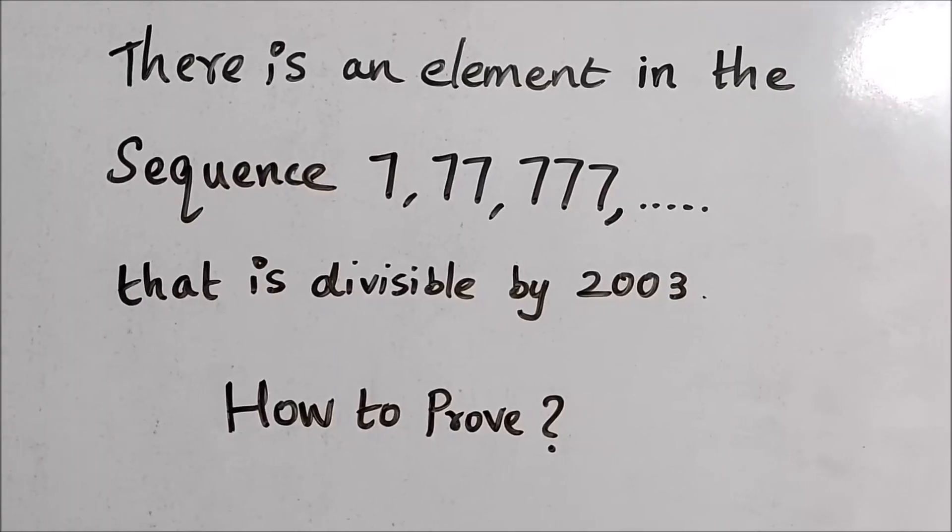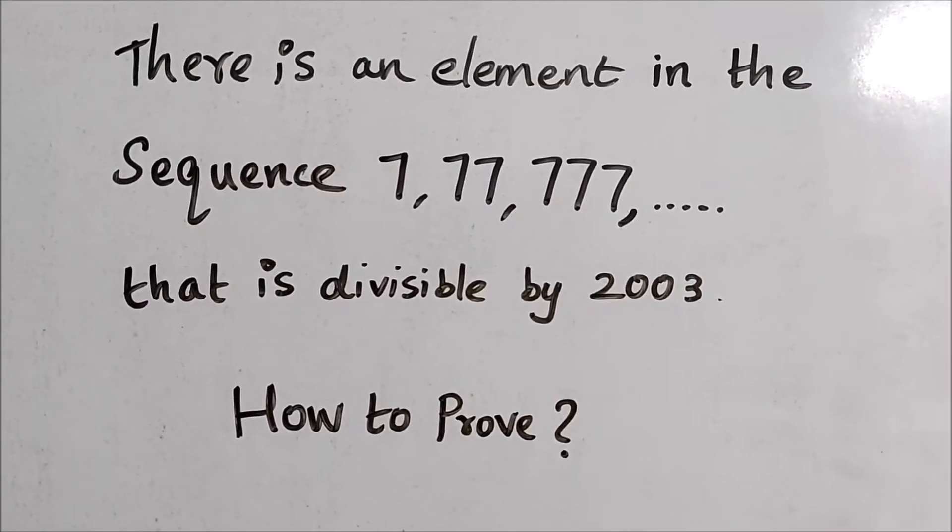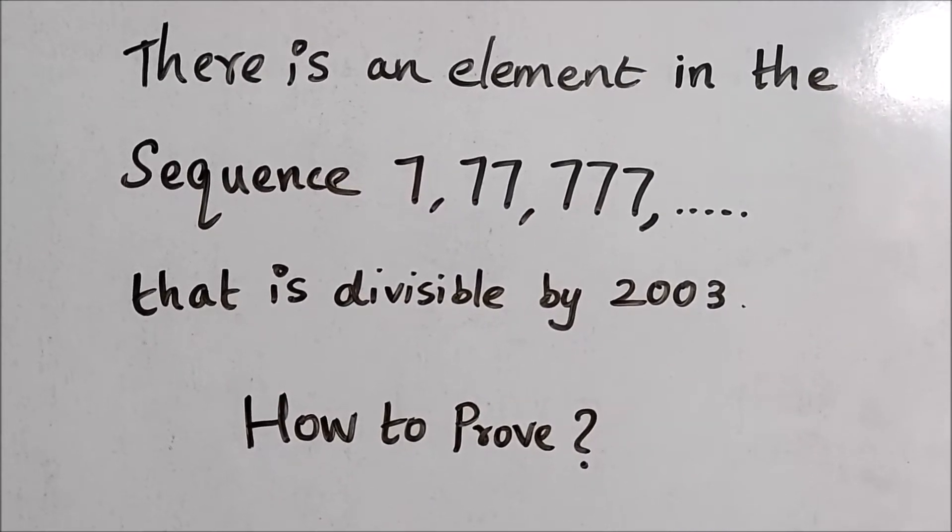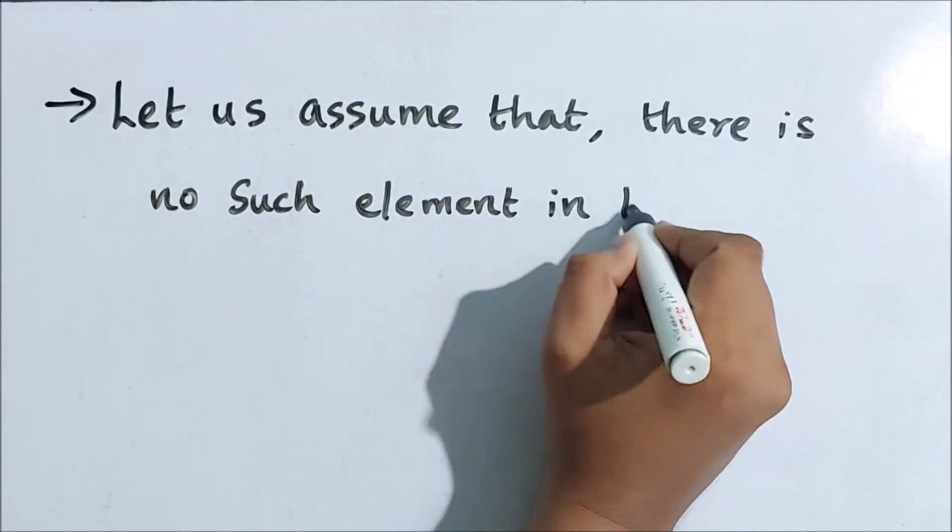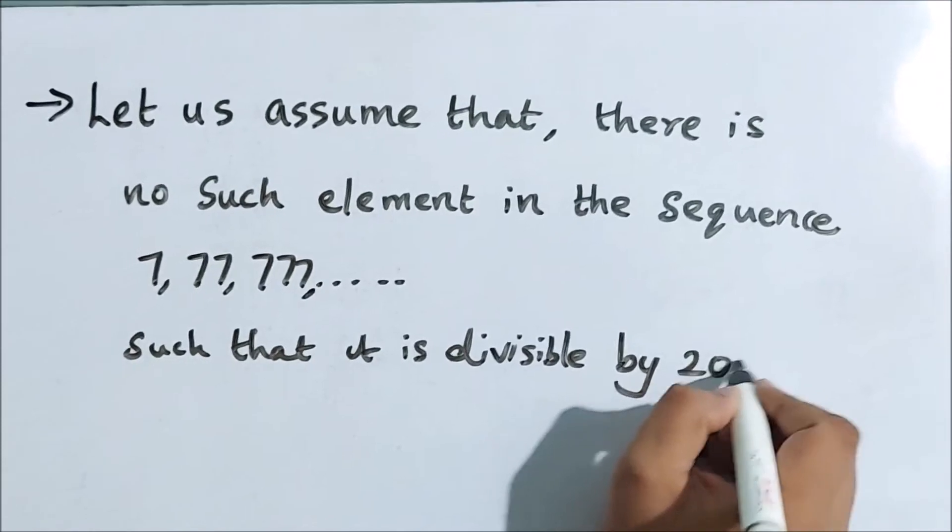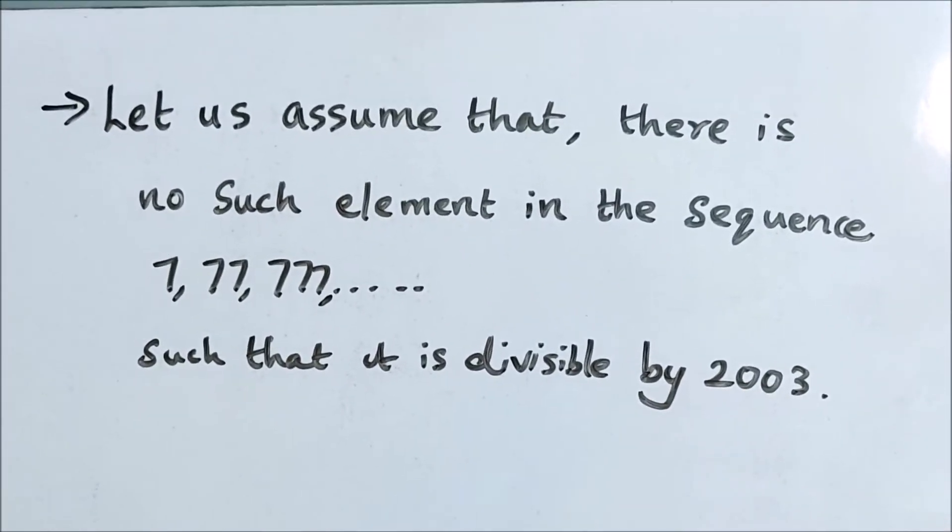So our statement tells that there is an element in the sequence which is divisible by 2003. As an initial step, let's assume that there is no such element in the sequence such that that number is divisible by 2003.